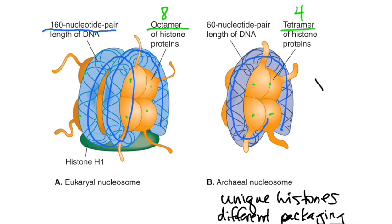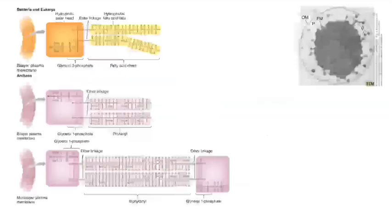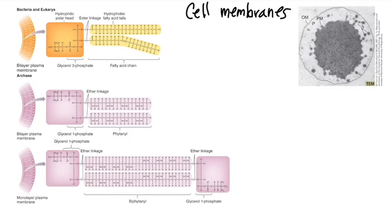This provides us with some evidence that the archaea were a branch point — that they came before eukarya because they have eukarya-like structures and enzymes, but they are still very similar to the bacteria. Now the cell membranes of archaea are particularly interesting because they are different from both bacteria and eukarya. Bacteria and eukarya have that typical cell membrane — a lipid bilayer — and each of those lipids is made up of a glycerol 3-phosphate with a fatty acid chain.